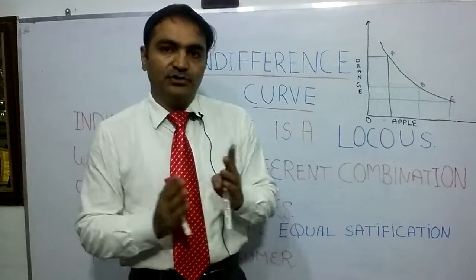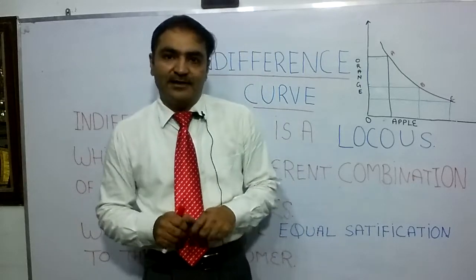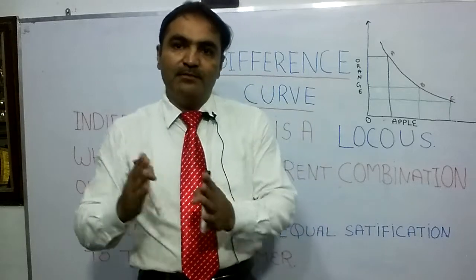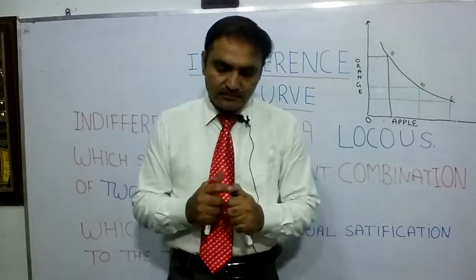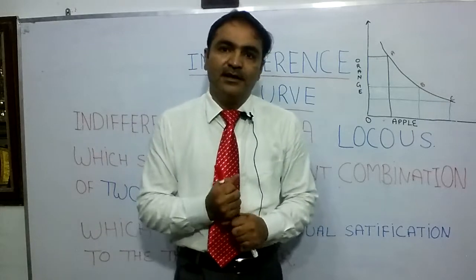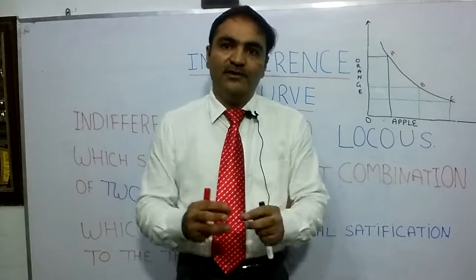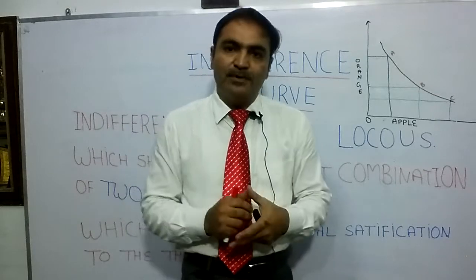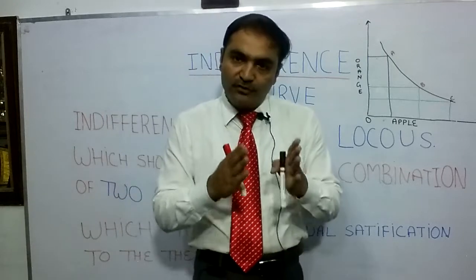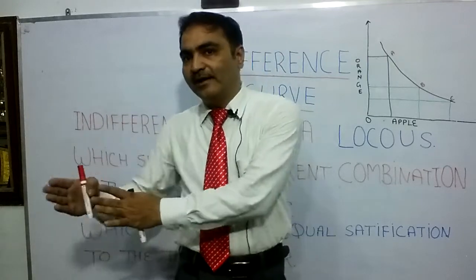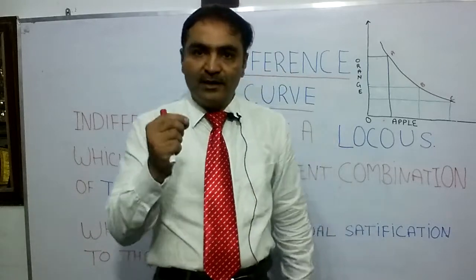Marshall's theory says that utility can be measured in terms of numbers. But Hicks says that utility cannot be measured in numbers. We can only compare — for example, a glass of water is better than juice, or a glass of milk is better than juice, or less good than juice. So we can compare utilities.